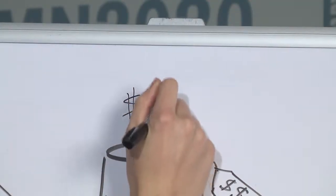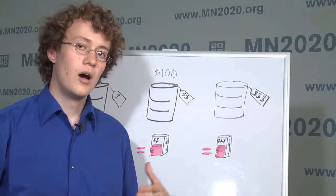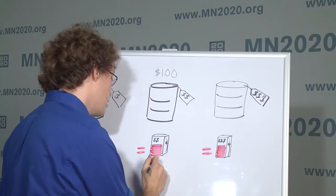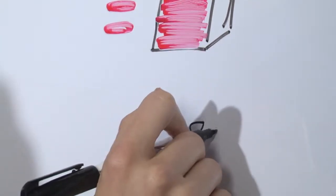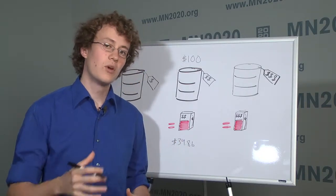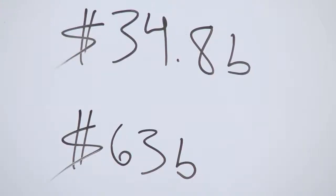Under our current system, when oil is $100 a barrel, our $0.18 gas tax will give us $34.8 billion in revenue. Under this new system with the oil security fee, we would get $63 billion in revenue.